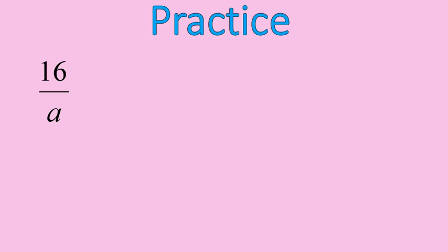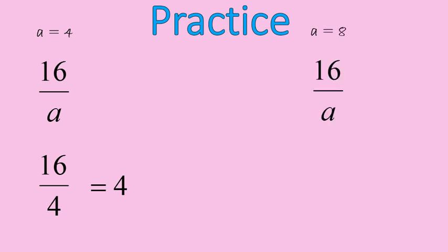Another practice question: 16 over A means 16 divided by A. When A equals 4, sixteen divided by four is equal to four. Let's do it again when A equals 8: sixteen divided by eight is equal to two. So we've done practice using all four operations — addition, subtraction, multiplication, and division. When you substitute a value into an expression like this, that's what you're doing: solving variable expressions.